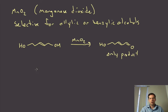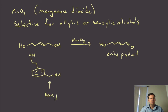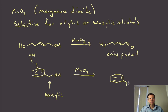For a benzylic example: a substrate with one non-benzylic alcohol and one benzylic alcohol — next to the aromatic ring — treated with a large excess of MnO2 will selectively oxidize only the benzylic alcohol to give an aldehyde, leaving the other alcohol untouched. That's the oxidation of alcohols.